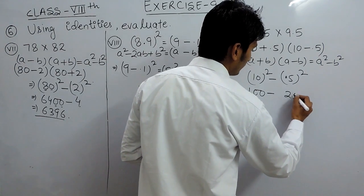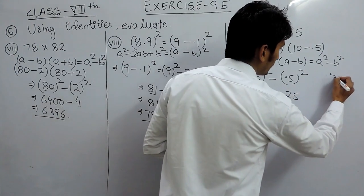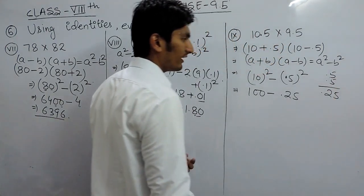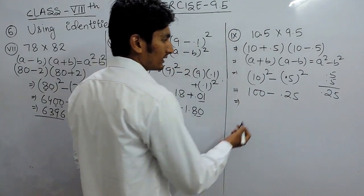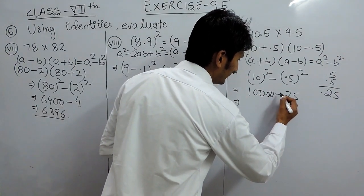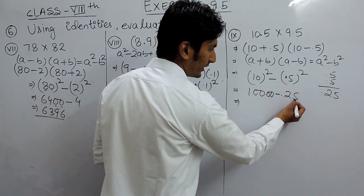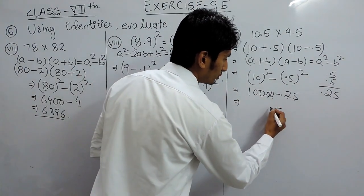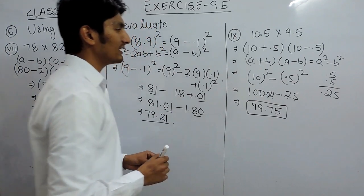And 0.5 squared: 5 into 5 is 25, but since we are multiplying 0.5 by 0.5 there will be 2 decimal places, so this is 0.25. Now we subtract: 100.00 minus 0.25. So 0 minus 5 — taking a carry — 10 minus 5 is 5, 9 minus 2 is 7, and 9 and 9. So the answer is 99.75. This is how you can solve these questions.